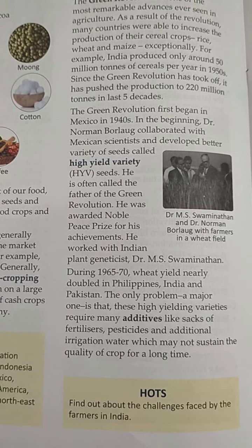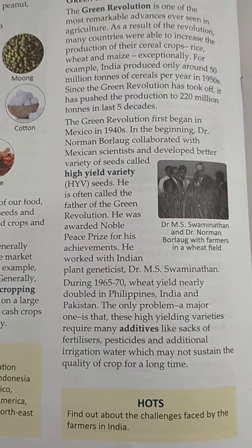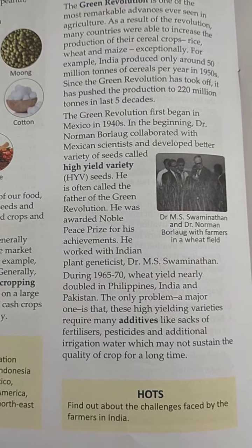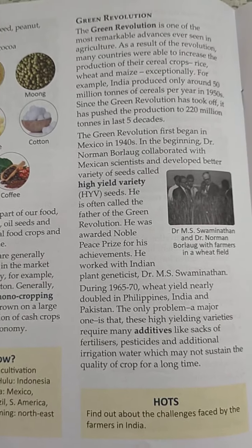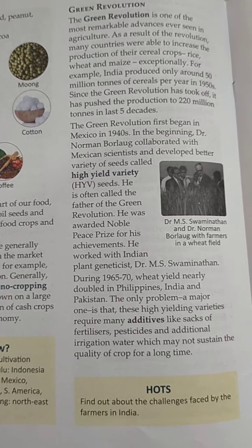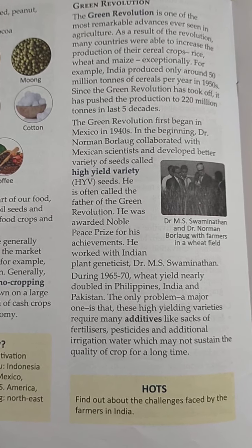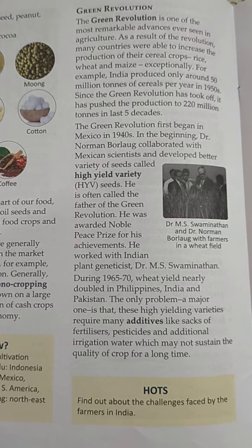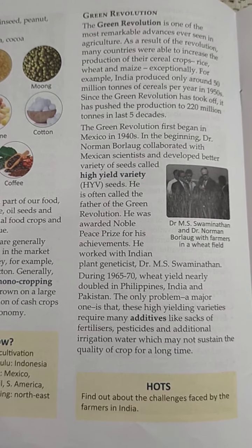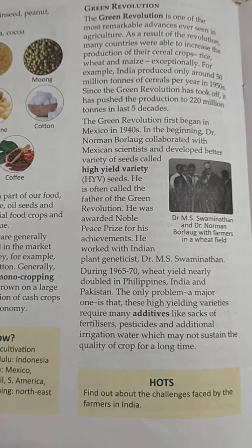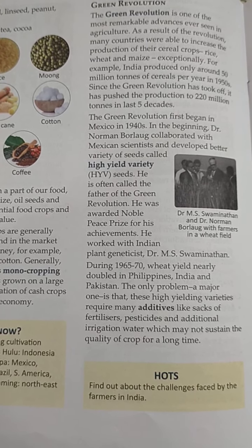During 1965 to 1970, wheat yield nearly doubled in Philippines and India. But there are some problems with the high yield variety seeds. They require a lot of fertilizer, pesticides, and water through irrigation, which is not good for the crop or the land.